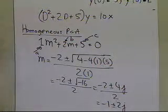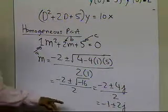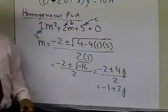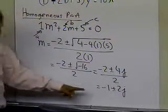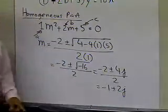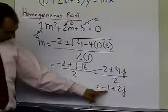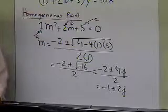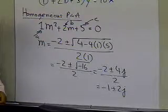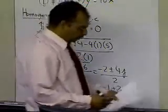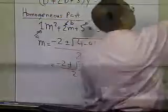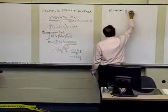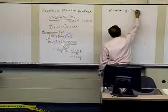The roots of this particular quadratic equation are not real — they are not real and distinct, or real and repeated — they are in fact complex. You're getting a real part, which is minus 1, and a complex part, which is plus or minus 2. So the roots of this equation are minus 1 plus 2j, and minus 1 minus 2j.